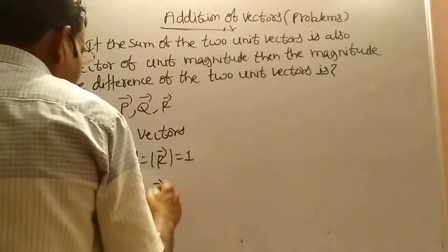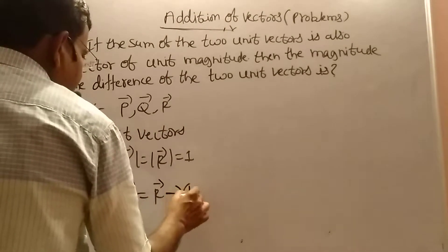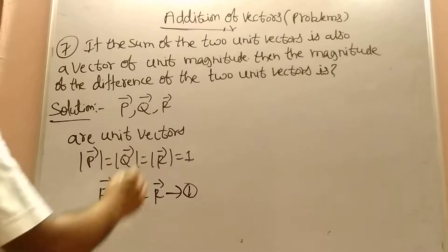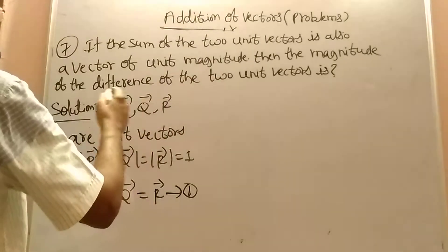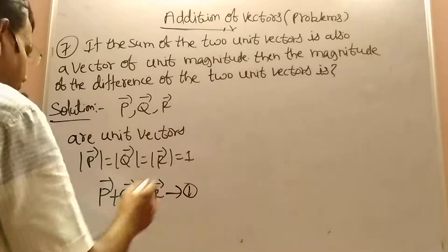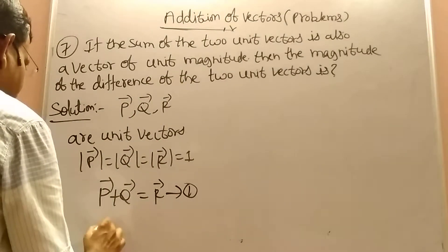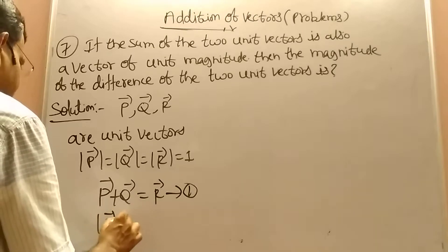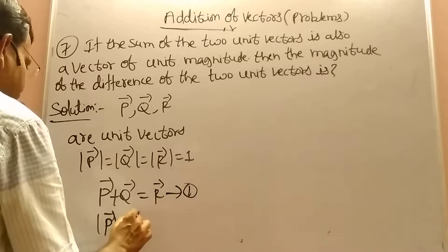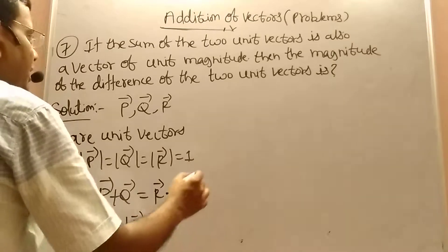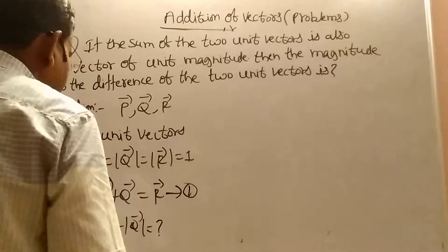By using that relation as our first equation, we are now finding the magnitude of the difference of the two unit vectors — that is, the magnitude of P minus Q. This is the value we are finding.